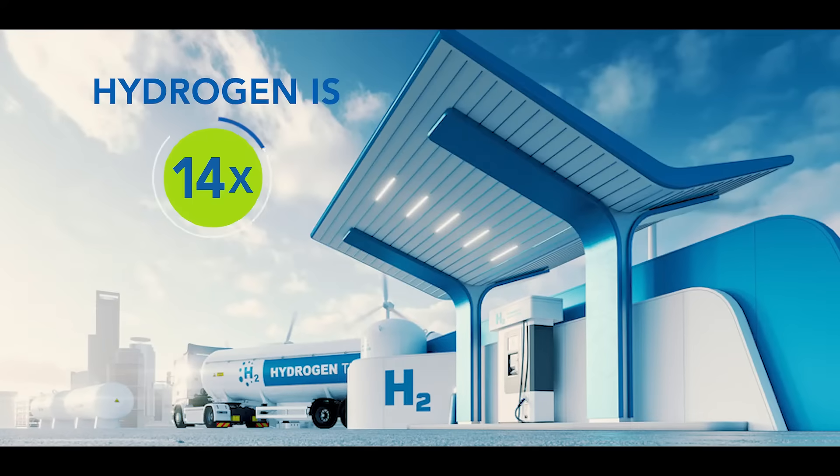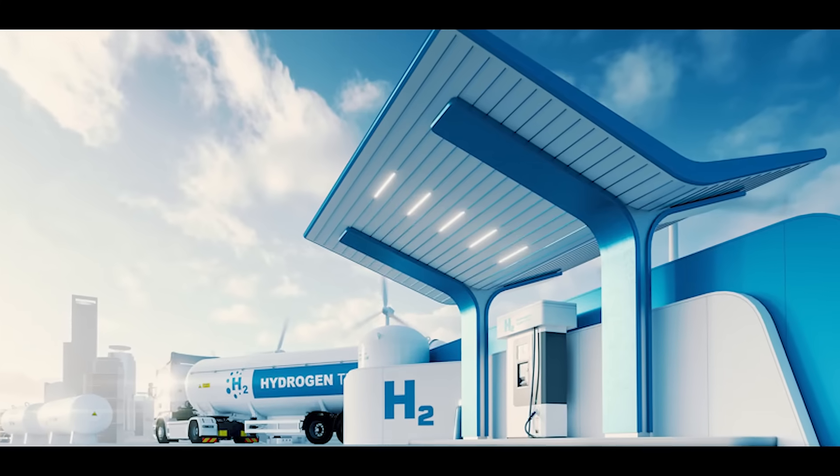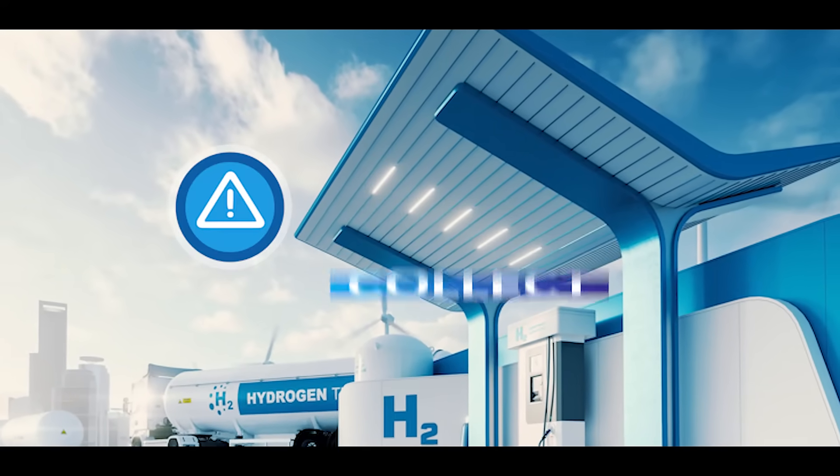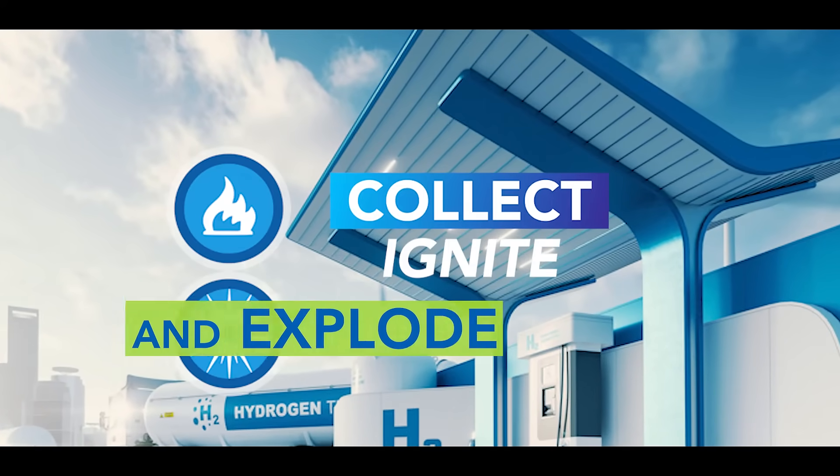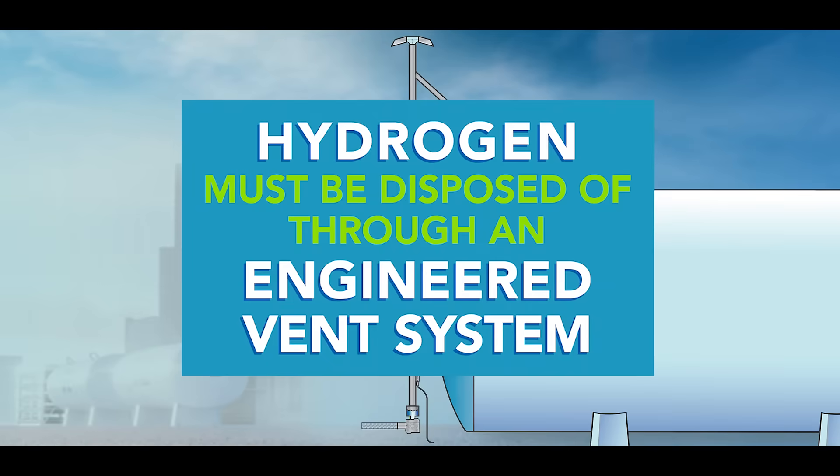Hydrogen is 14 times lighter than air and rapidly rises. If it becomes trapped, hydrogen can easily collect, ignite, and explode. Therefore, hydrogen must be disposed of through an engineered vent system.